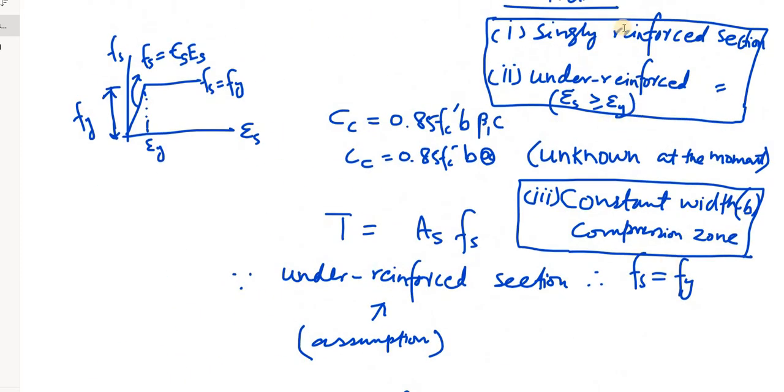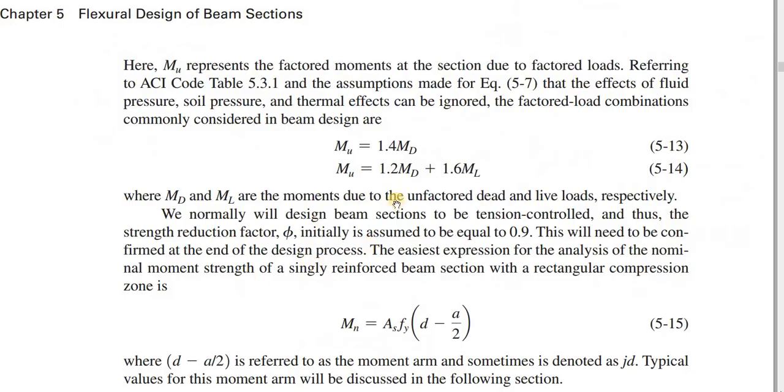Constant width compression zone, singly reinforced section. This is our topic. So, MN is given by this expression.